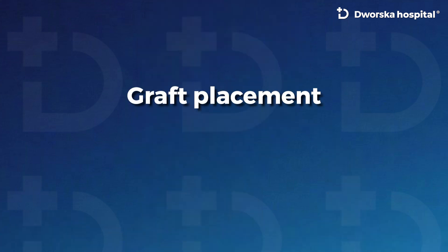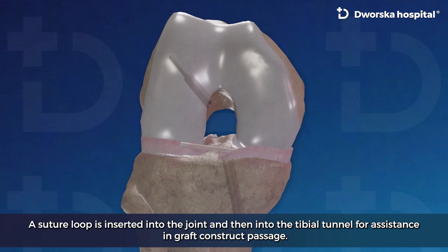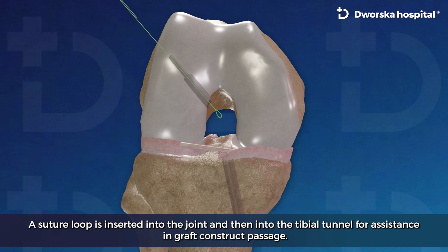Graft placement. A suture loop is inserted into the joint and then into the tibial tunnel for assistance in graft construct passage.